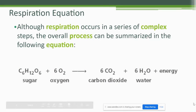The respiration equation — you should have a picture of this on your notes. Respiration occurs in complex steps with multiple stages, but this overall process can be written as an equation, just like we did with photosynthesis. The raw materials that go into respiration are on the left: sugar, which is glucose, and oxygen. The arrow represents how that chemical reaction happens and when energy is released. The products — what is produced — are on the right: carbon dioxide, water, and energy.